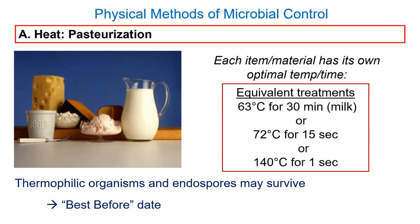Eventually, surviving organisms might grow and spoil the milk — this is why best before dates exist. The best before dates aren't really legislated; they're a guideline the food industry puts in. For example, white milk might be good for five days after the best before date, while chocolate milk goes bad on the day of. Why? All that sugar promotes growth of microorganisms, so it tends to go bad much quicker than white milk.